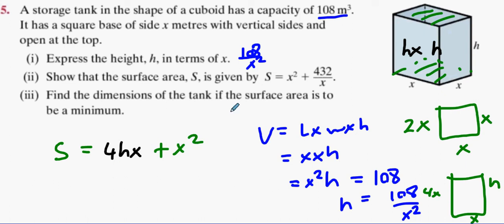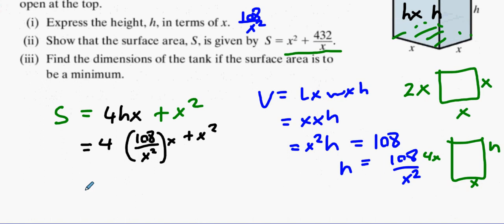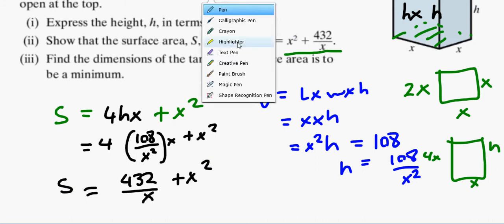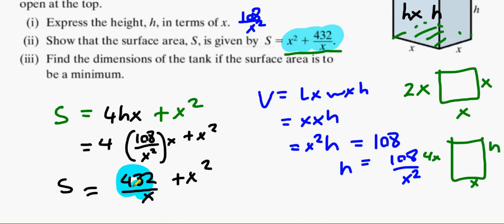What's the difference between my answer and their answer? I need to get rid of the h. So how do I get rid of the h? 4 times 108 over x squared times x plus x squared. And I'm pretty sure 4 times 108 is 432 over x plus, same thing aren't they?